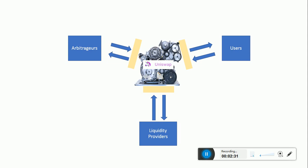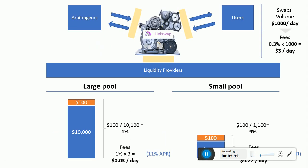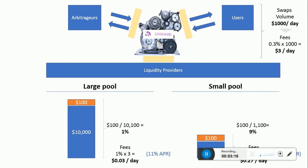Now let's look at this in the context of comparing two different scenarios — a real scenario, a little simplified. We have our Uniswap engine here and the external market with arbitrageurs and users. Let's imagine a pool you're familiar with — for example, Ethereum-DAI or Ethereum-Maker. For simplicity, let's say within this pool there is a swap volume of $1,000 a day — meaning $1,000 worth of Ethereum and the token, say DAI, gets swapped every day via this pool. As you know, Uniswap has a 0.3% exchange fee, so from this volume of $1,000 a day, there are $3 per day generated in fees.